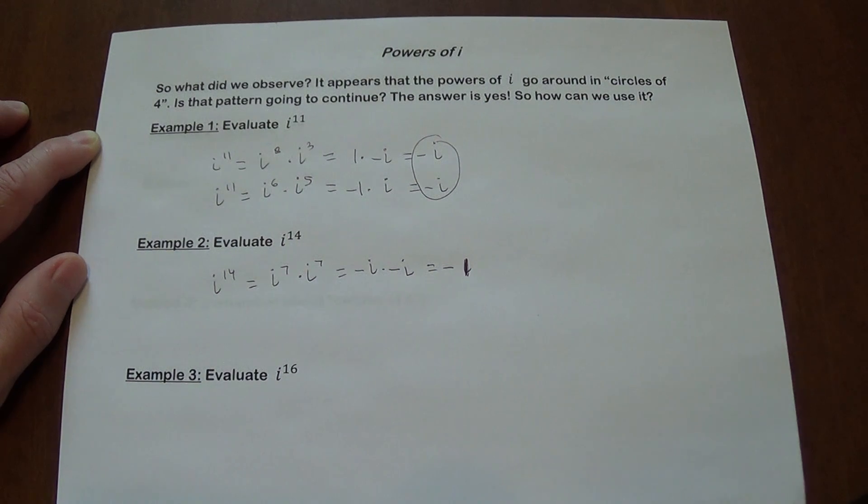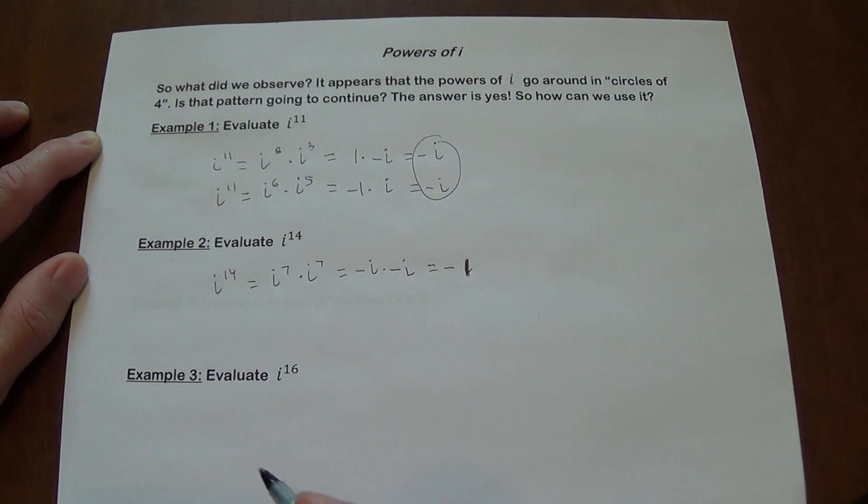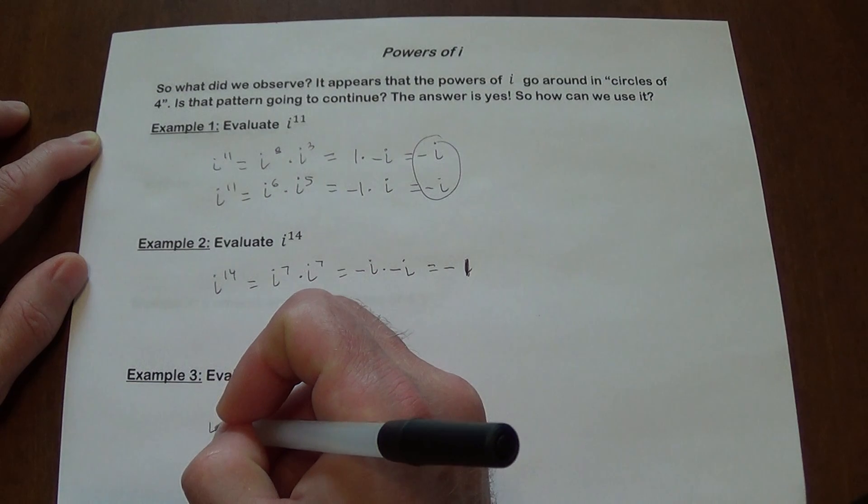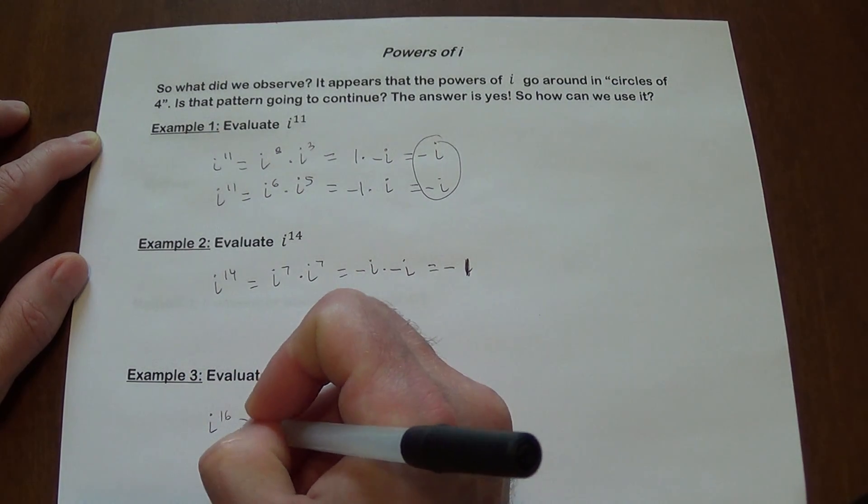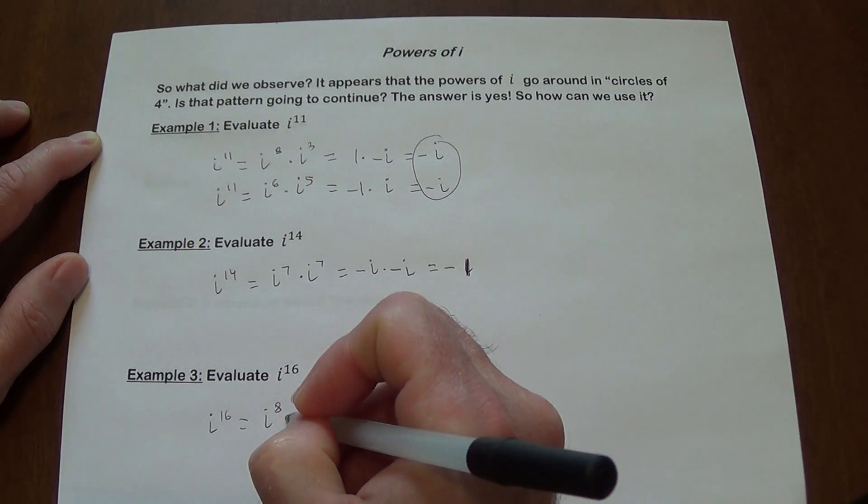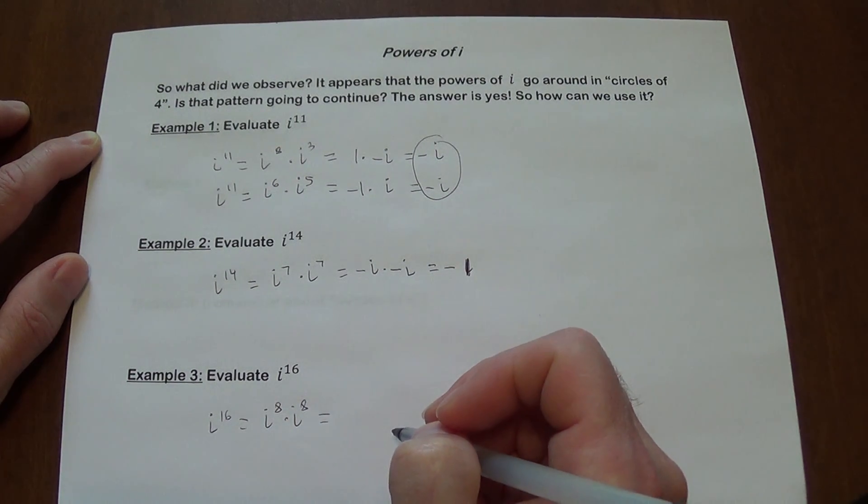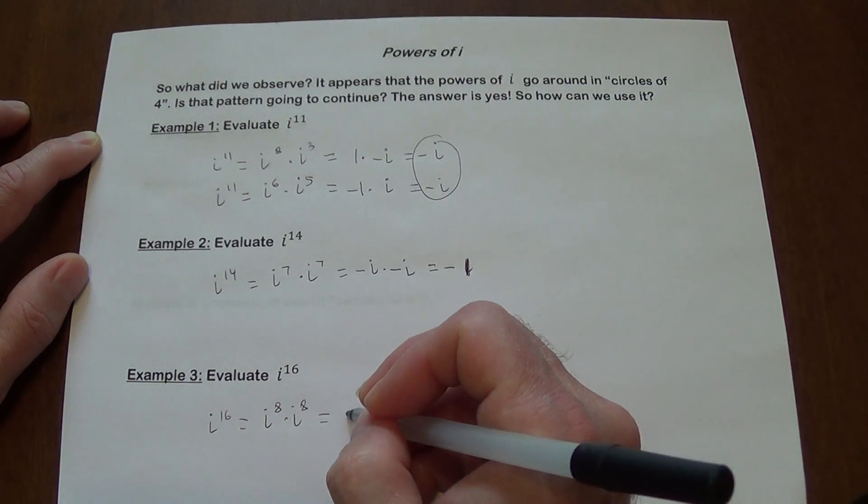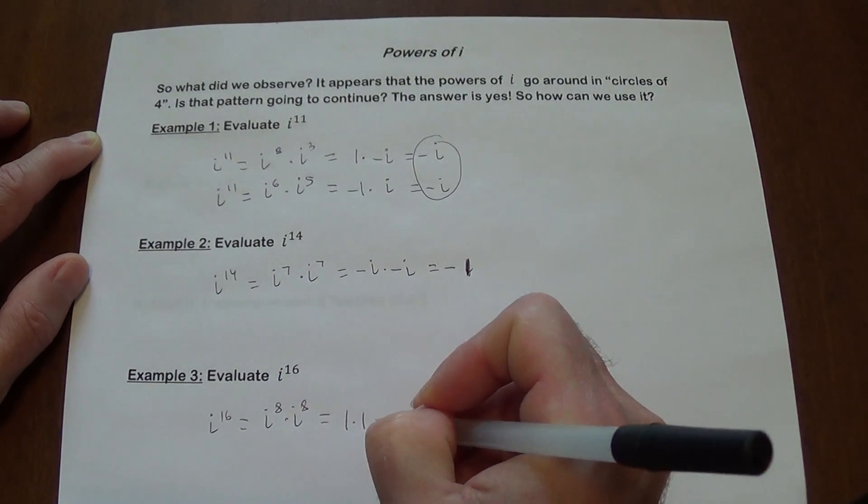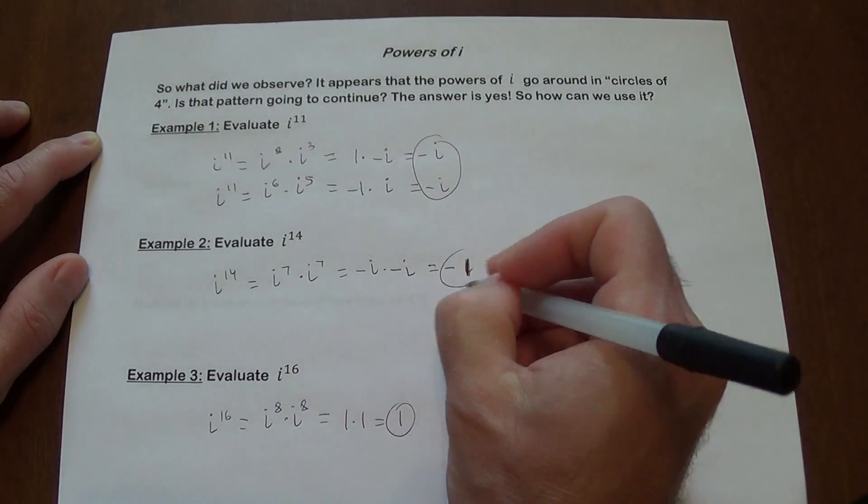i to the sixteenth power. Since we went up to i to the eighth, we can probably write that as i to the eighth times i to the eighth. Eight plus eight is sixteen. That's one times one, which gives us one.